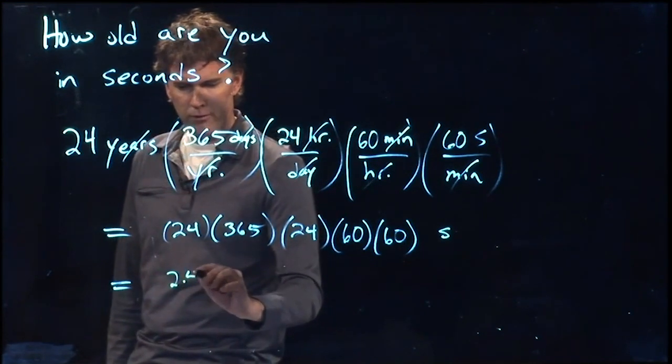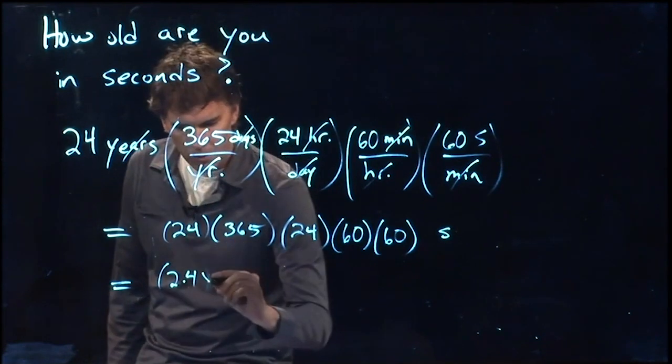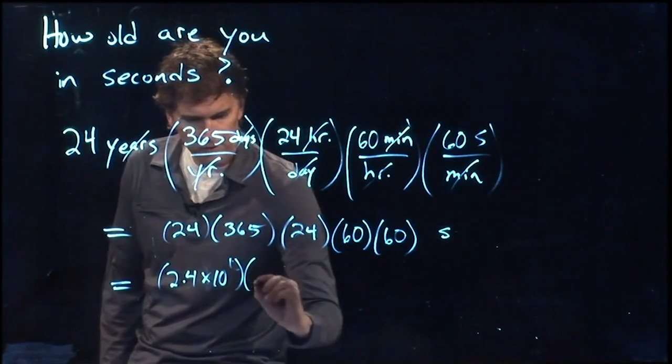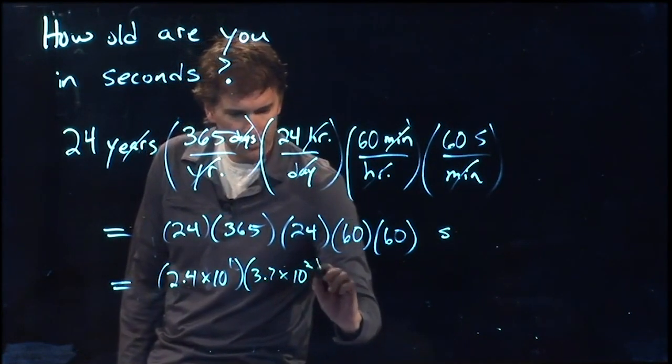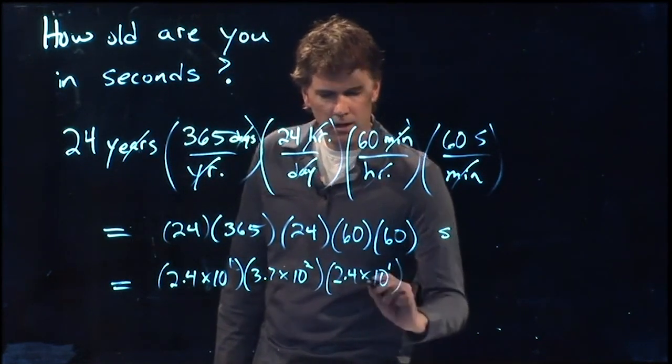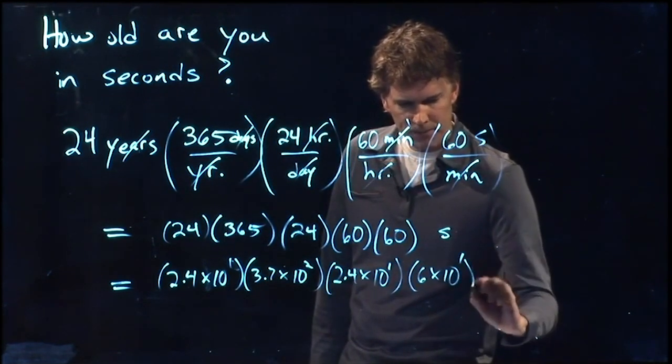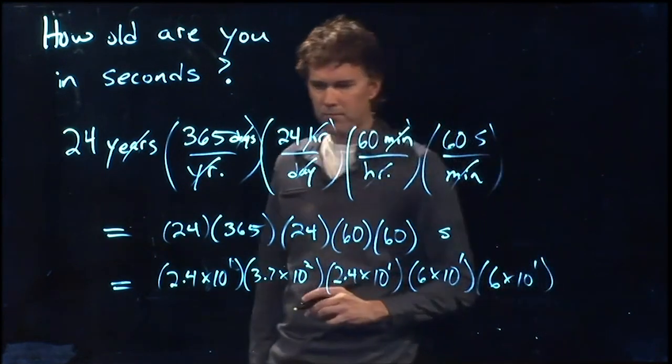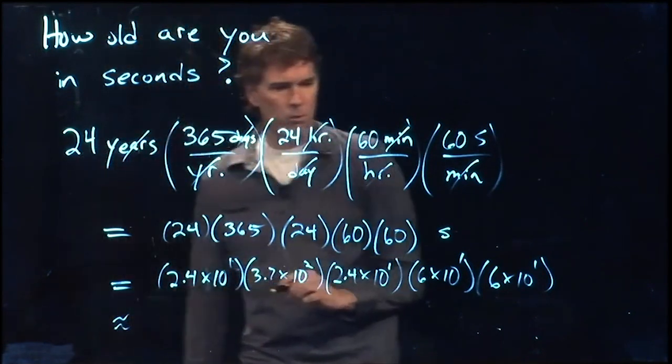So we've got 2.4 times 10 to the 1, then we've got 3.7 times 10 to the 2, and then we have another 2.4 times 10 to the 1, and we have a 6 times 10 to the 1. So this is approximately what? Well,